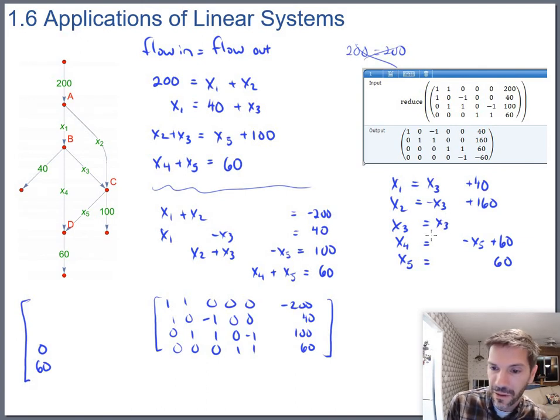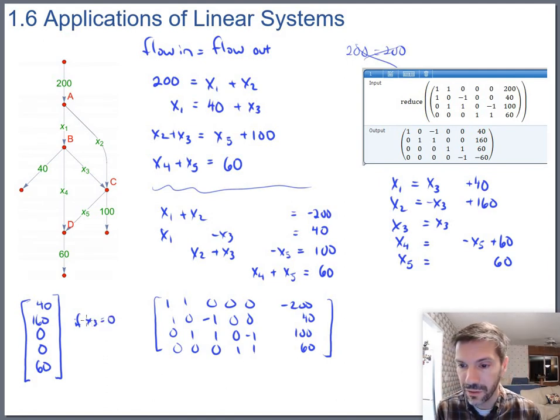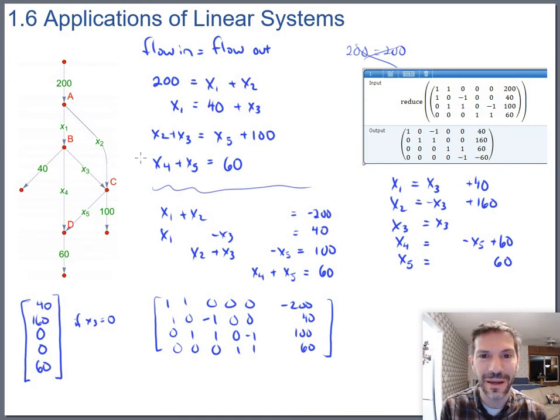And then x1 just needs to be 40 more than whatever we pick for x3. So one possible solution would be to say, if there's no flow at x3, so let's pick x3 to be zero, which would mean x2 would be 160, and x1 would be 40. So I should say that's if x3 equals zero.